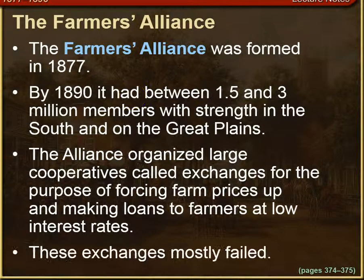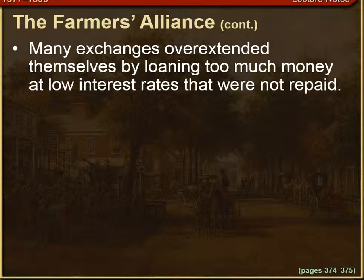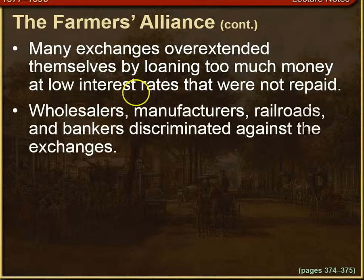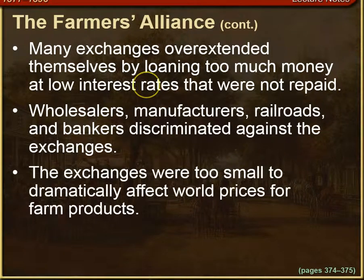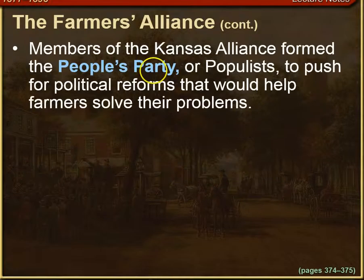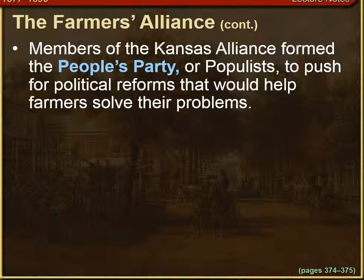These exchanges mostly failed — they weren't very effective. Many exchanges overextended themselves, loaning out too much money at low interest rates that weren't repaid. Wholesalers, manufacturers, railroads, and bankers discriminated against the exchanges, and the exchanges were often too small to dramatically affect world prices for their farm products. Members of the Kansas Alliance then formed what was called the People's Party, or Populist Party, to push for political reforms that would help farmers solve their problems.